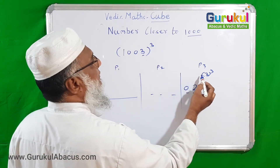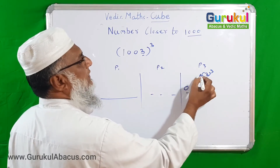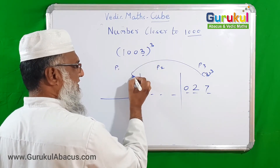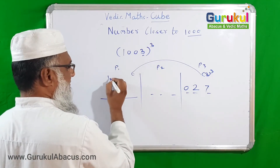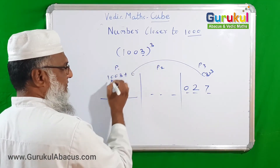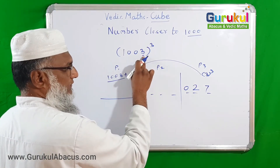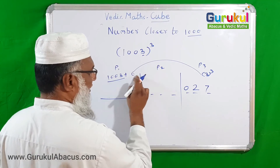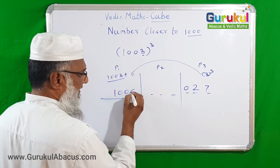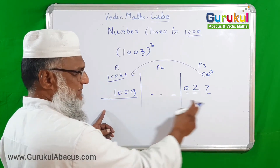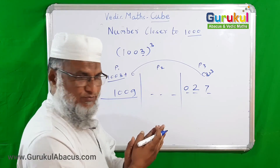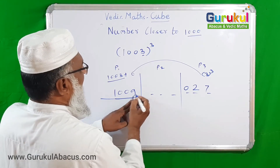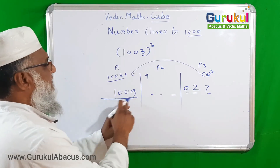Now for P1: we wrote cube of 3 for P3, so here we want double of 3. Double of 3 is 6. And we add the original number 1003 to this double: 1003 plus 6 equals 1009. So 1009 is our first part P1. Now using those two parts we make the middle part P2.